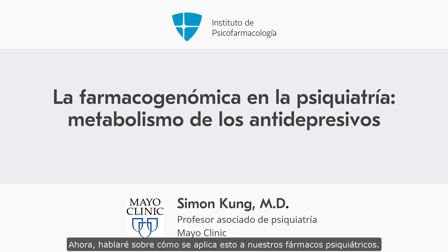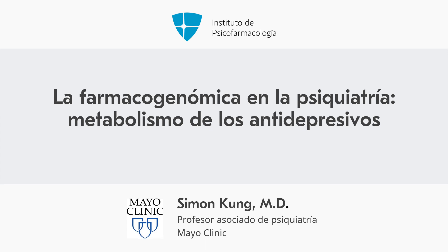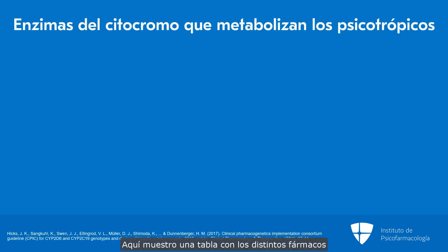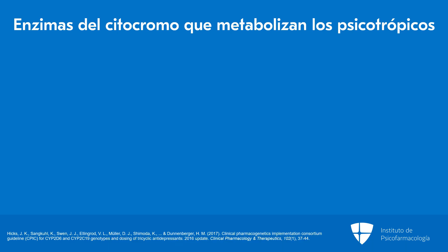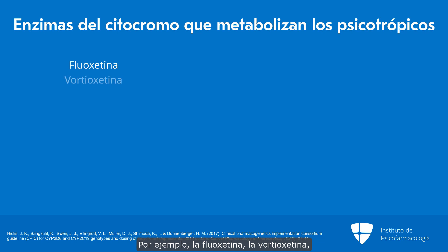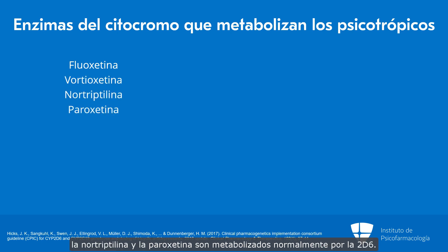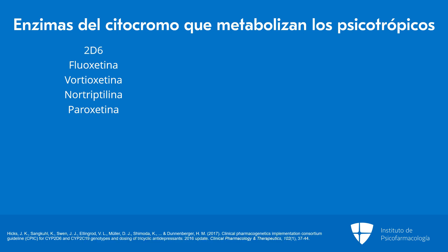Now I'll talk about how this is applied to our psychiatry medicines. I'm showing a table of the different medicines we use in psychiatry and what the enzymes are which metabolize those medicines. So for example, fluoxetine, vortioxetine, nortriptyline, paroxetine — these are classically metabolized by 2D6.